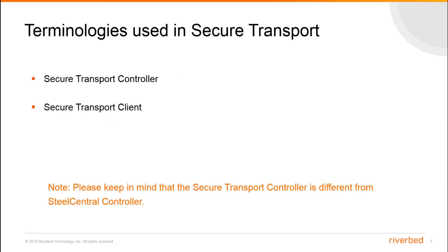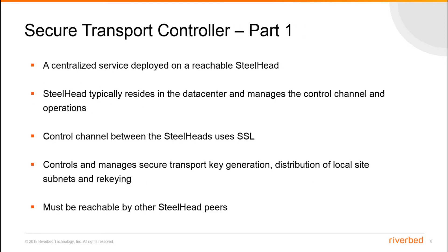Terminologies used in secure transport: secure transport controller and secure transport client. Please keep in mind that the secure transport controller is different from Steel Central Controller. A secure transport controller is a centralized service deployed on a reachable steelhead. The steelhead typically resides in the data center and manages the control channel and operations required for secure transport between steelhead pairs. The control channel between steelheads uses SSL to secure the connection between the paired steelheads and the steelhead's secure transport controller. The secure transport controller controls and manages secure transport key generation, distribution of local site subnets, and re-keying between secure transport peers. The secure transport controller must be reachable by other steelhead peers.